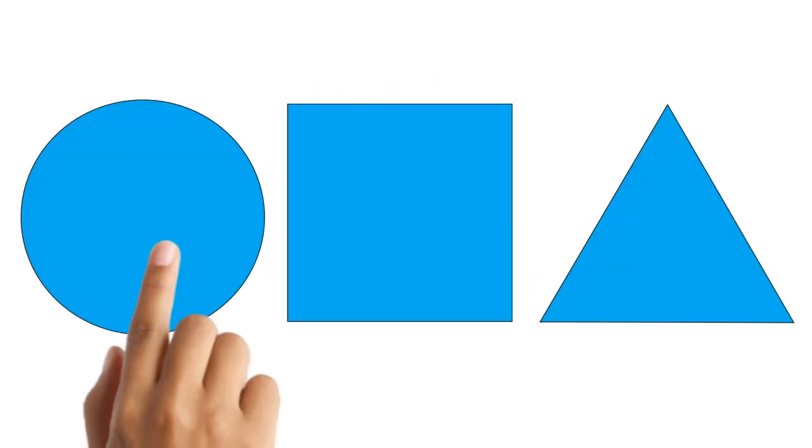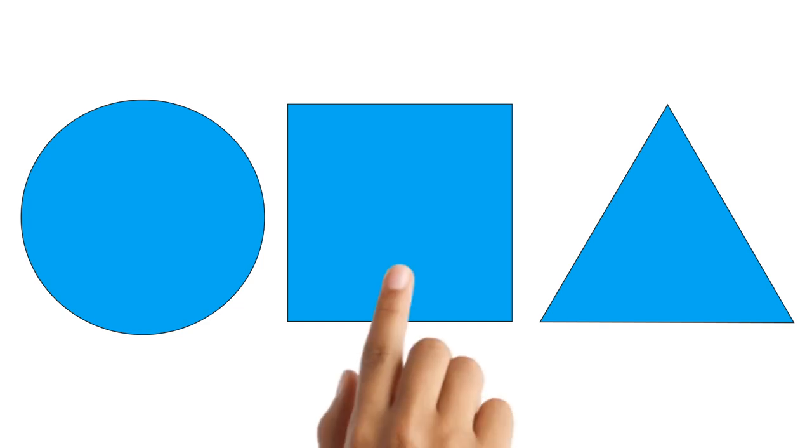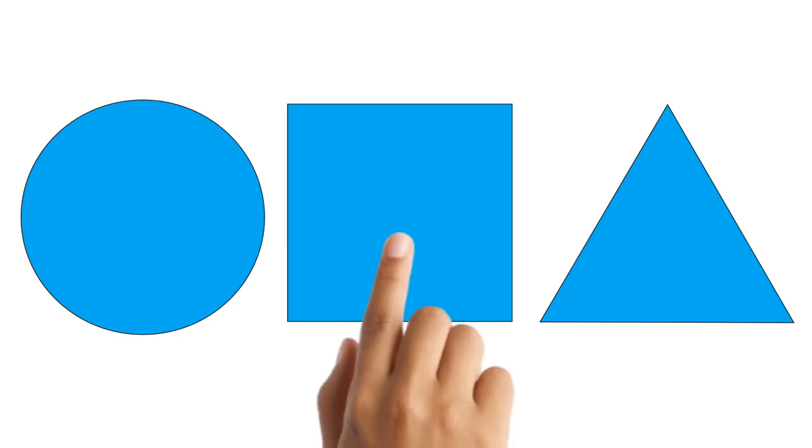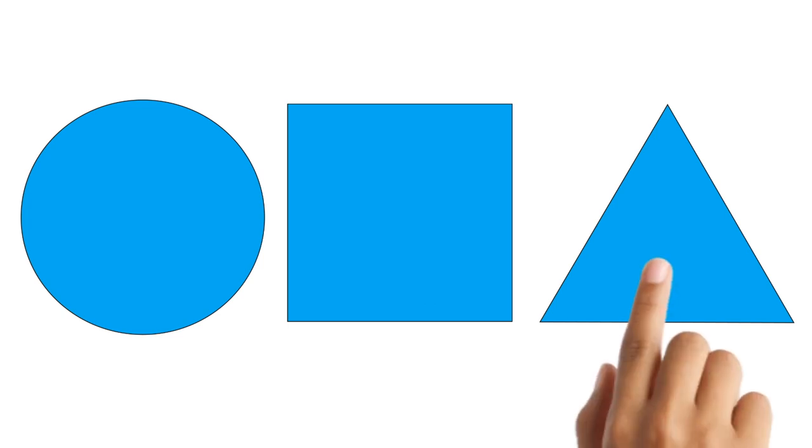What shape is this? A circle. Circle. What shape is this? A square. What shape is this? A triangle.